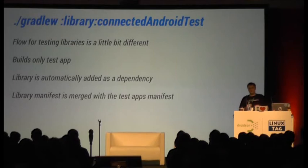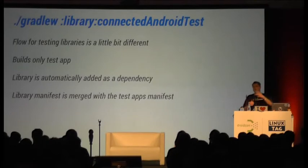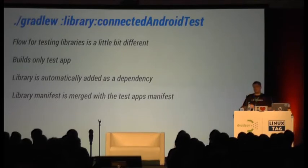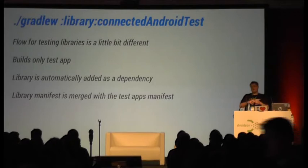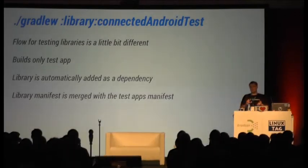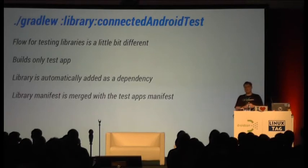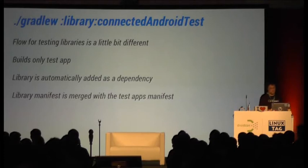The flow for libraries is a little bit different, because you cannot install an Android library on a device — the artifact is an AAR file and you just can't install that. So what happens is Gradle just builds the test APK and adds your Android library as a dependency to it, so you actually have your test code and your application code in the same APK. Apart from that, it's very similar.